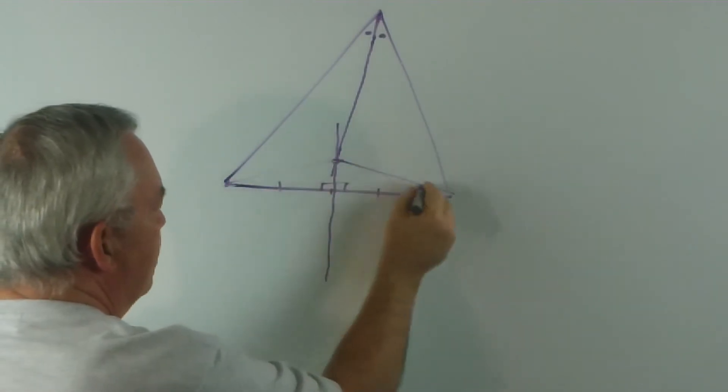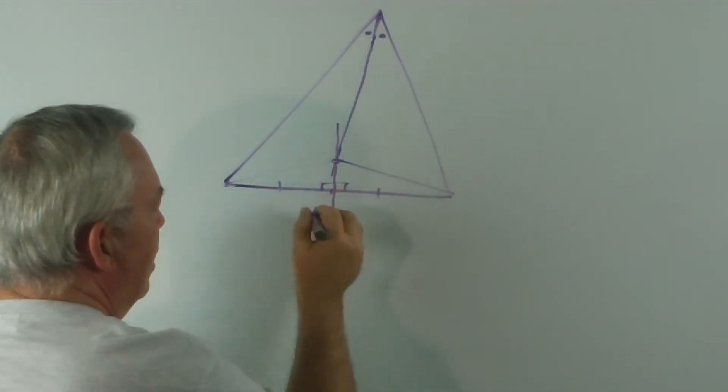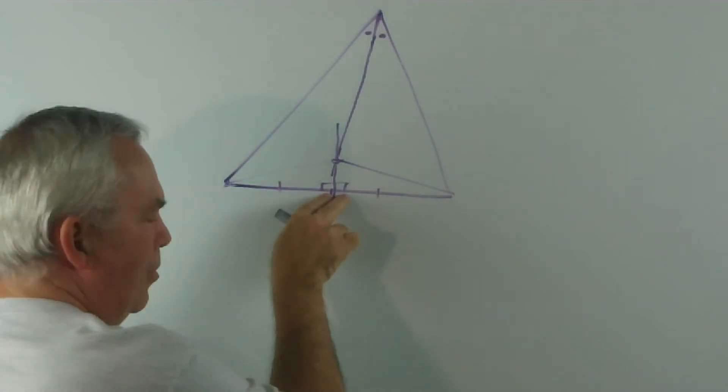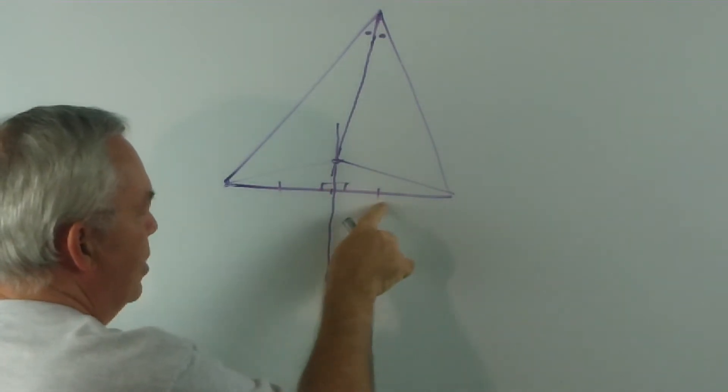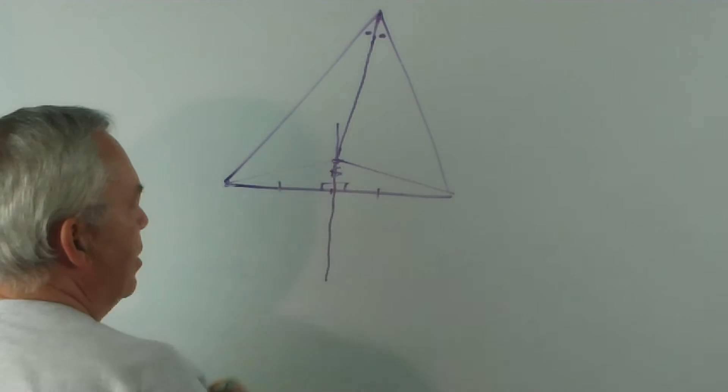We have two triangles here. They both have a right angle, these sides match, and we have one side in common.